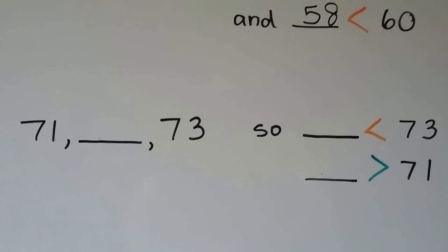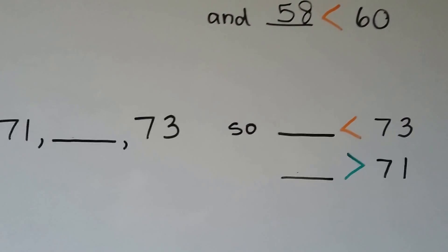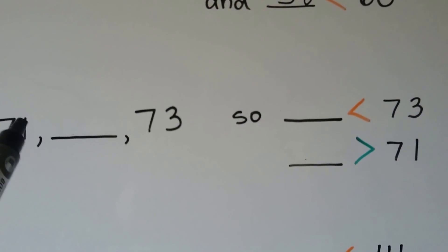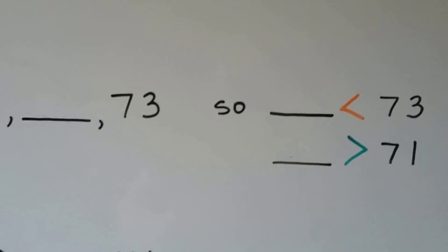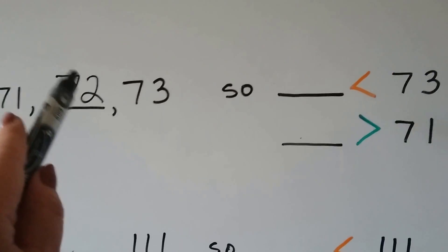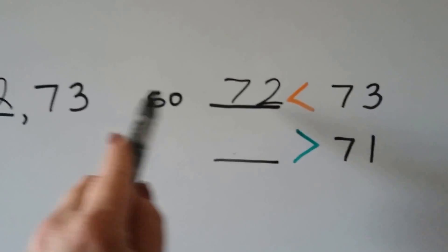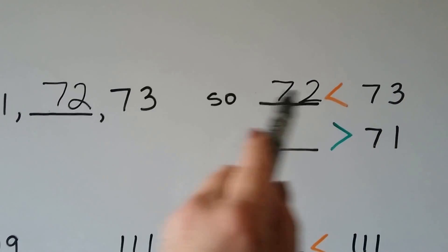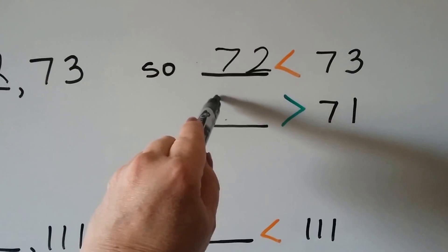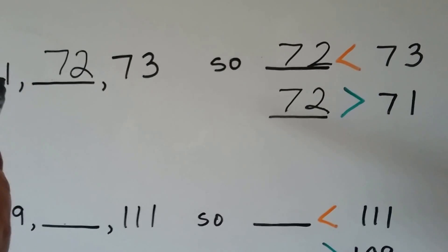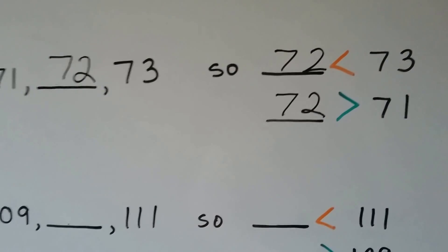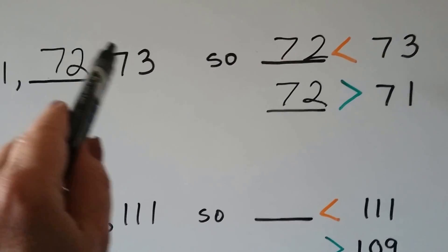We have seventy-one, an unknown number, and seventy-three. They're going up by one, so that should be seventy-two. Seventy-two is less than seventy-three because it comes before it, and seventy-two is greater than seventy-one because it comes after it. It comes before seventy-three, so it's less than seventy-three.